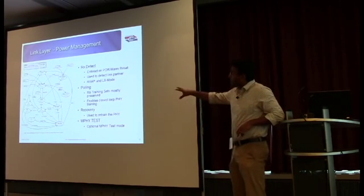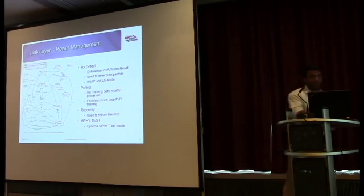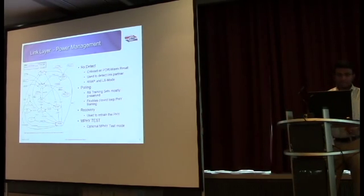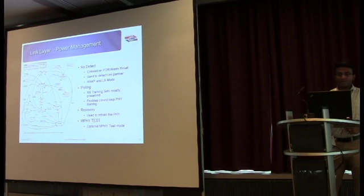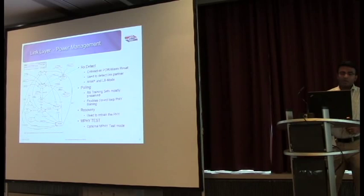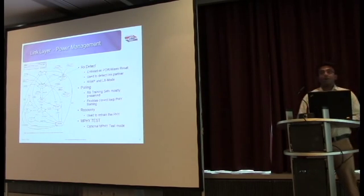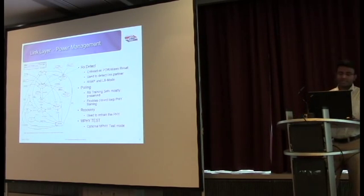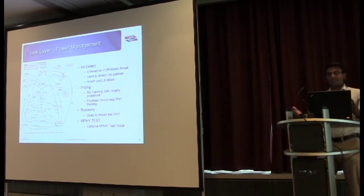So, for example, the Rx detect state out here, that is entered every time you see a power on reset. That is used to detect the link partner. So, that is the receiver detect state and once you get a power on reset, you enter the RRAP mode and the low-speed mode. So, once the link partner is detected, you go into the next LTSSM state.